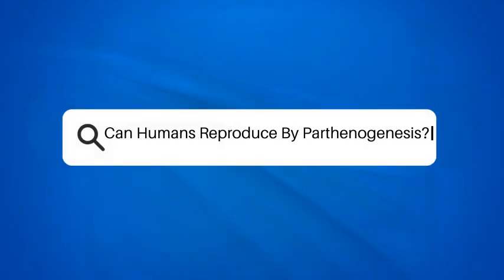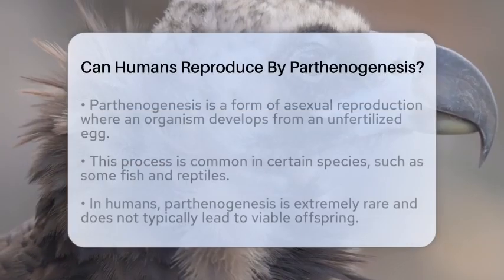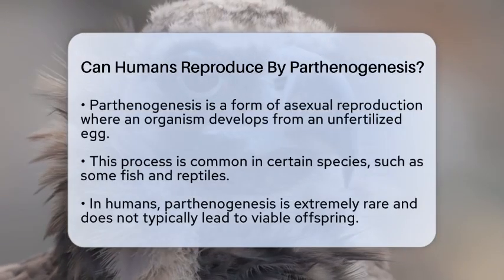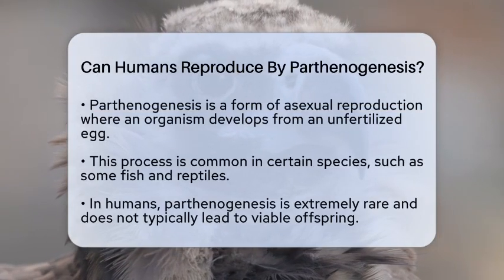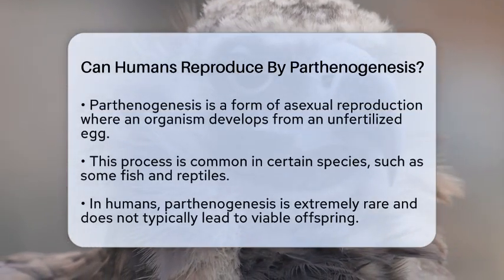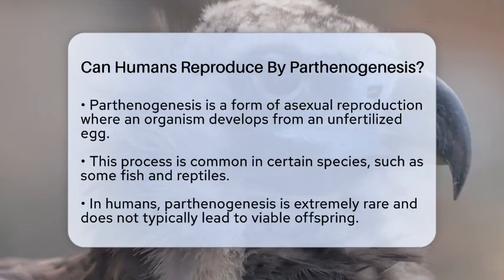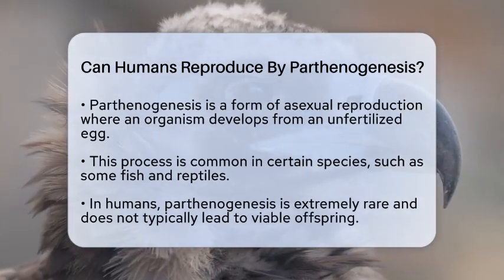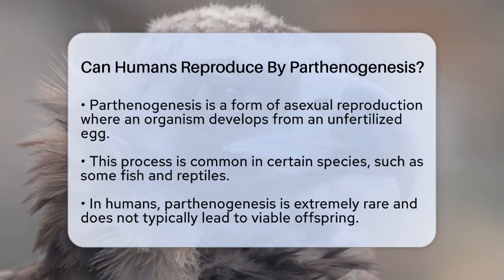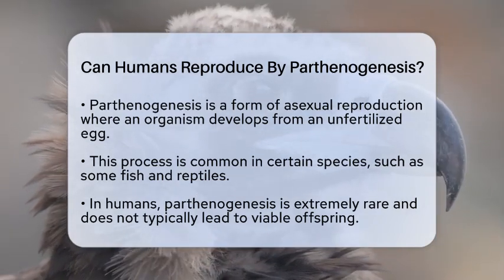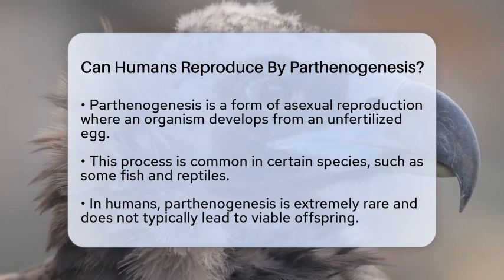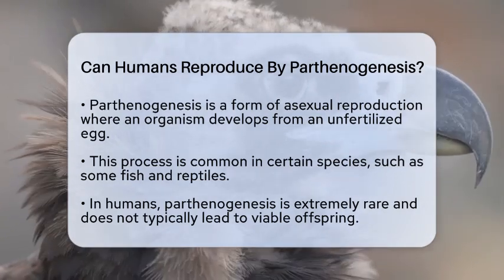Can humans reproduce by parthenogenesis? Have you ever wondered if humans could reproduce without the involvement of a male? This concept is known as parthenogenesis, a fascinating form of asexual reproduction. In parthenogenesis, an organism develops from an egg cell without fertilization. While this process is common in certain species, like some fish and reptiles, it is not something that typically occurs in humans.